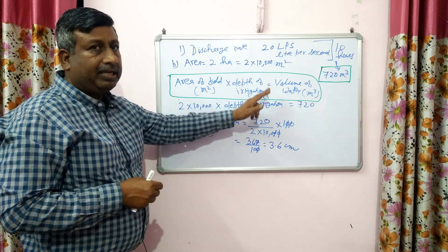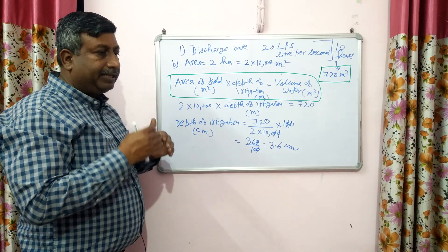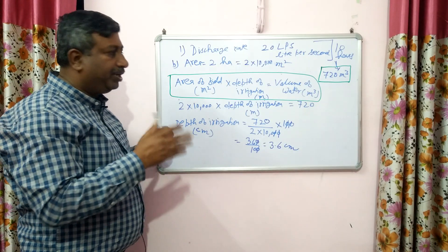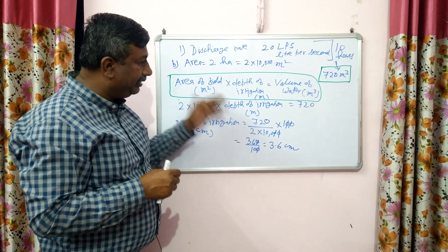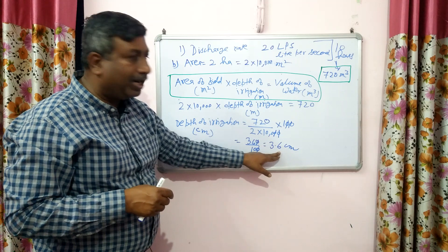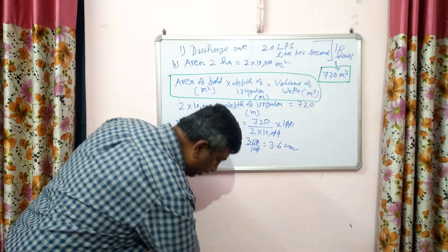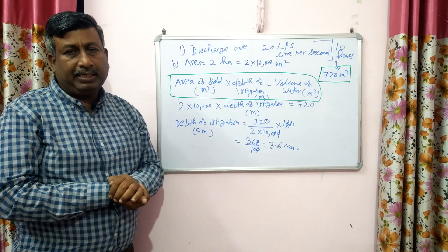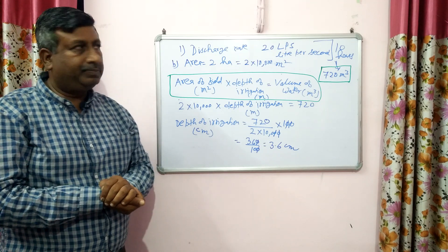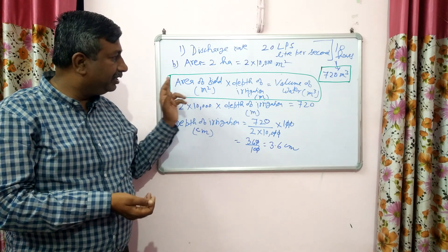Then we can calculate the depth of irrigation if the area is given, and we can calculate the area of the field if the depth of irrigation is given. A third situation may be: if both area and depth are given, we can calculate the volume of water — how much water is required for that area and depth. This is the way how we can calculate depth of irrigation and area to be irrigated with known discharge rate and time.